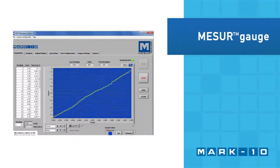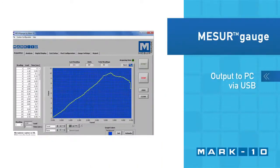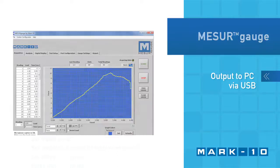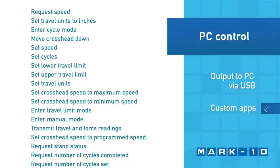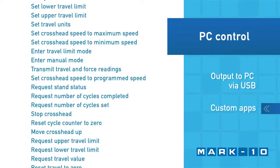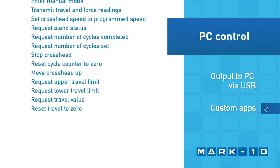Force and distance data can be output to a PC via USB for graphing and reporting. Custom applications can also be developed utilizing the ESM-303's ASCII command set.